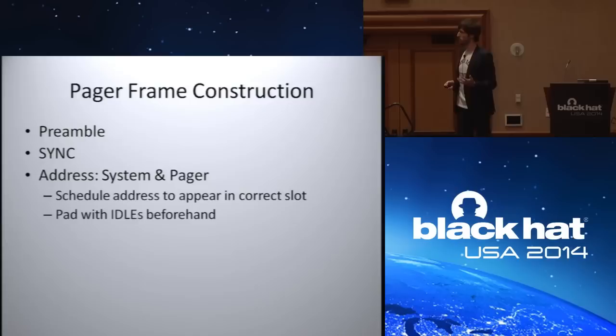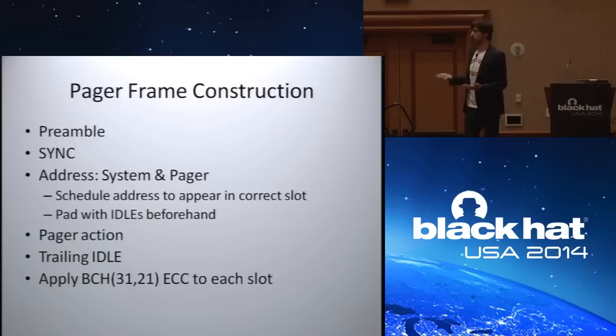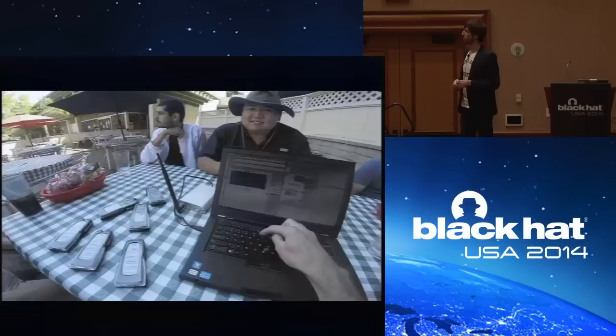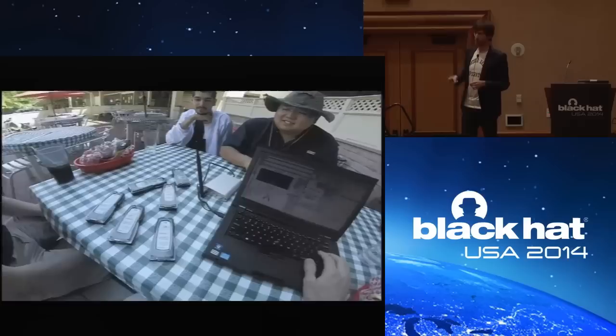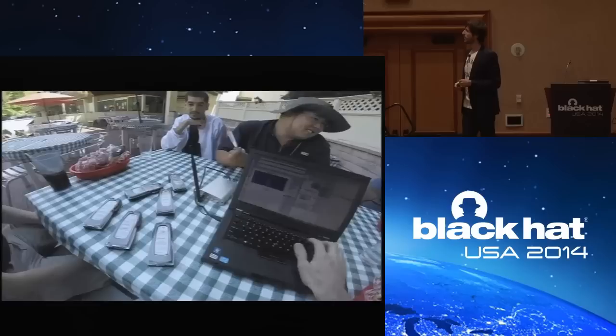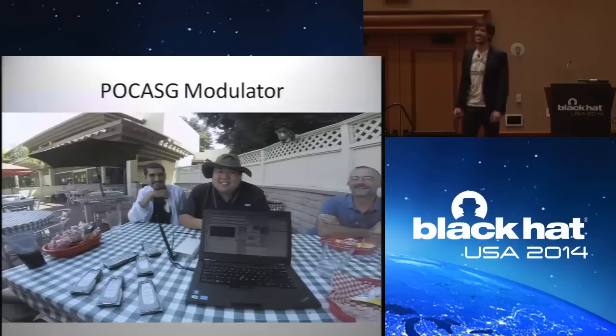Once you account for the slot structure, you construct your frame: preamble, sync, calculate the address, calculate the offset, insert the appropriate number of idles, and add POCSAG's BCH forward error correcting code to each slot. Pager 46 goes off, then 39, then 56 — though 56 didn't go off because my preamble was a little bit short per the standard.